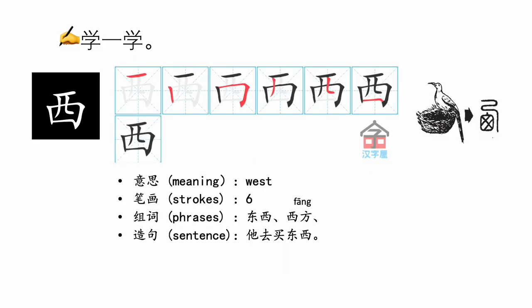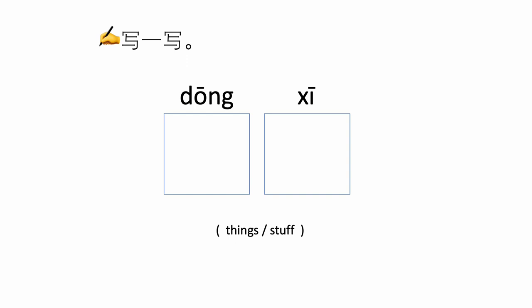After learning 东 — east, let's learn the opposite: 西, the west. It has six strokes: 横, 折, 撇, 竖折, 撇, 撇. It's a bit like a bird standing on a nest. It can form the phrases 东西 — things, 西方 — Western, and the sentence 他去买东西 — he is going to buy things. After learning 东 and 西, you can pause the video here and try to practice them.